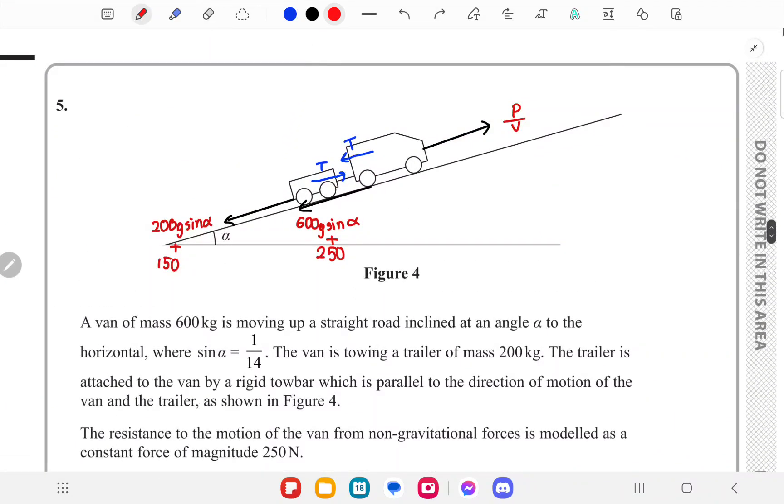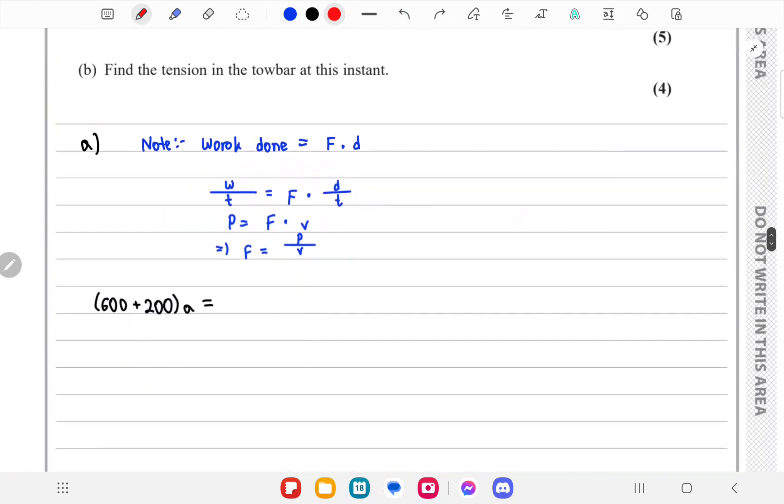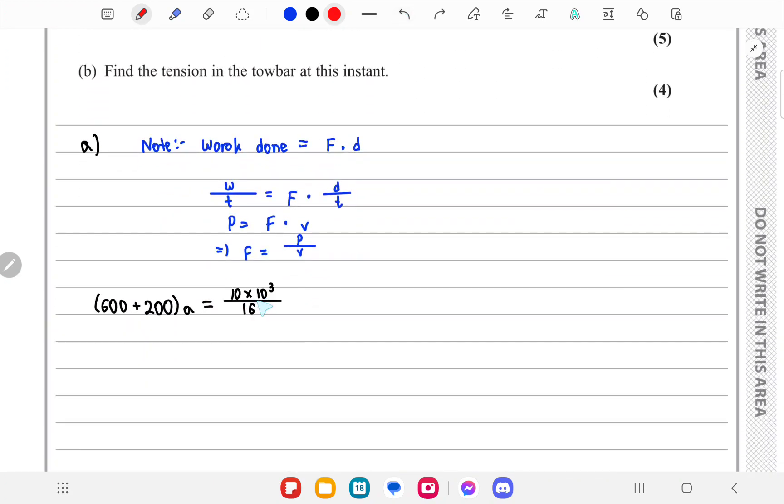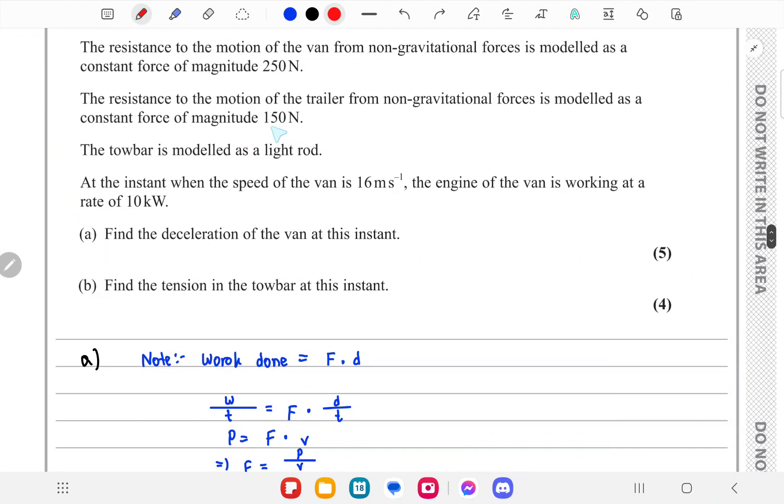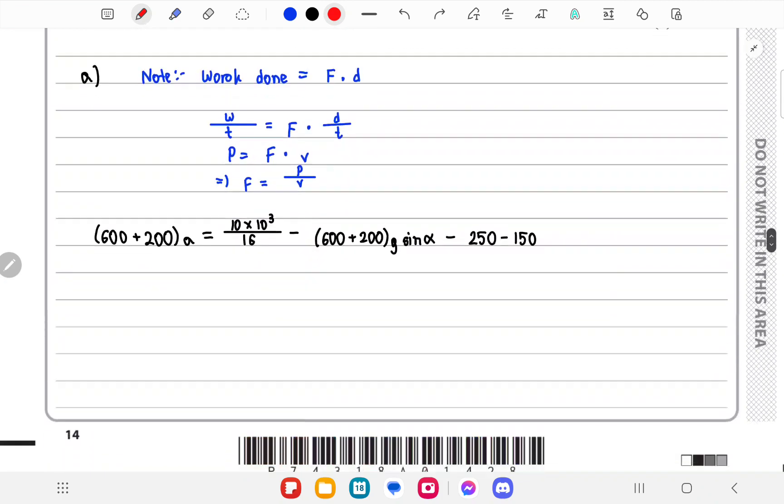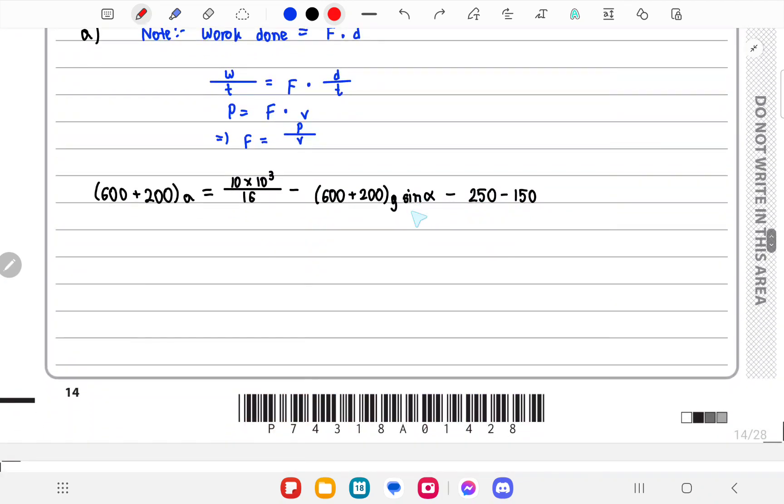We'll consider both as a single particle. Now for this system, the forward force is due to the engine: 10 kilowatts, so 10 times 1000 divided by 16, the velocity. Then you subtract the force due to gravity on both of them: 800g sine alpha, and the resistance to their motion due to non-gravitational forces, 250 and 150. We are also given that sine alpha is 1 by 14, so we can calculate a from here directly. The deceleration would be 0.419 meters per second squared.